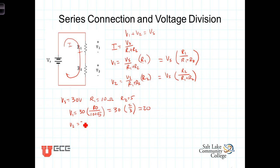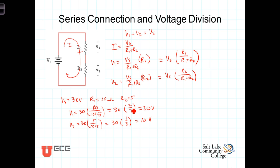Looking at V2, V2 will equal 30 times R2, which is 5 ohms, over 10 plus 5. That's equal to 30 times 1 third, or 10 volts. So with these numbers, R1 is 2 thirds, or 66 percent, of the total resistance, and it gets 2 thirds of the voltage dropped across it. And because R2 is only 5 fifteenths, or 1 third of the total resistance, the voltage dropped across R2 is 1 third of 30, or 10 volts.